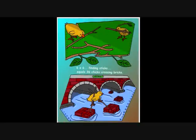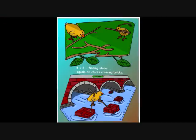And along the river, they saw some chicks collecting sticks — six chicks collecting six sticks. They explained that they needed the sticks to cross the river to get under the tunnel this way. Six times six, finding sticks, equals thirty-six chicks crossing the woods.